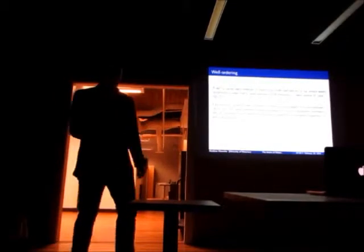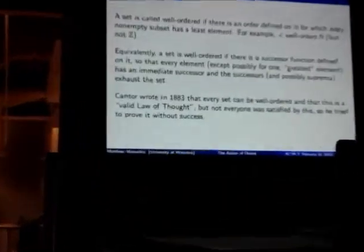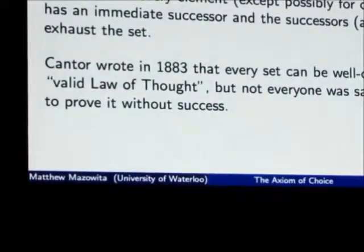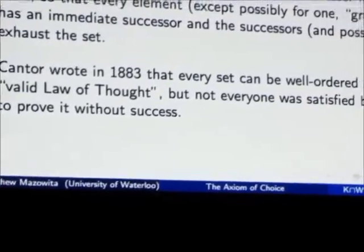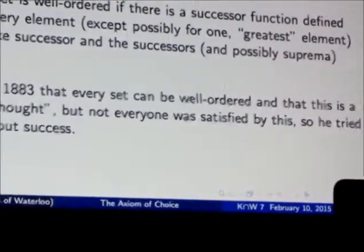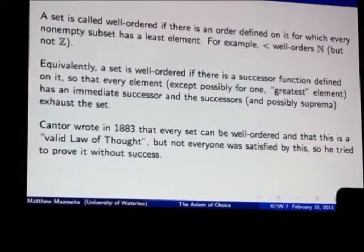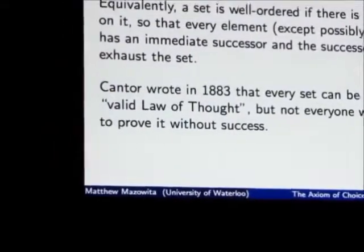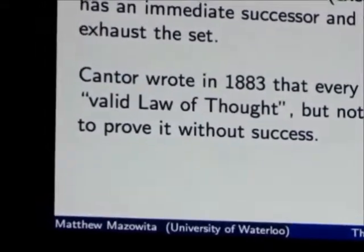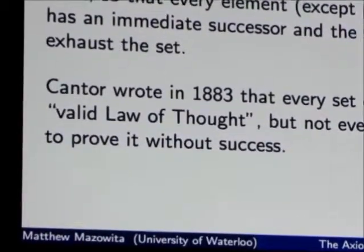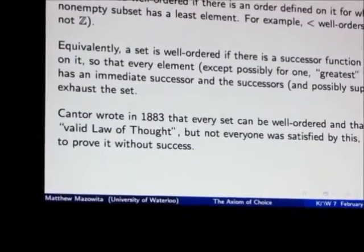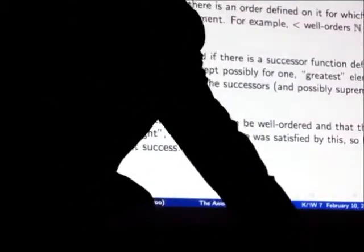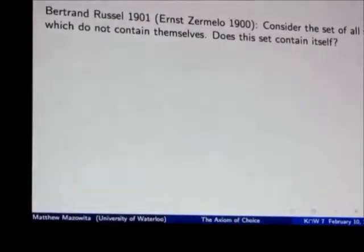People were trying to do this well-ordering. This was a really important problem way back in the day, in the 19th century. Cantor himself wrote in 1883 that every set can be well-ordered, he just declared this. He said that it was a valid law of thought, but perhaps not surprisingly, not everybody was convinced by this. If I give you the decimal numbers, how do you well order the decimal numbers? What is the next decimal number after root 2? There's no obvious answer, right? Cantor was just claiming, oh yeah, no problem, you just do it, it's fine.